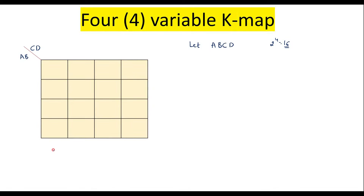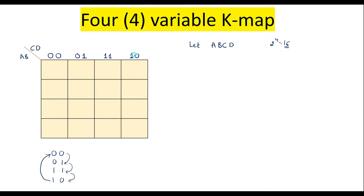We use gray coding to assign binary numbers to each row and column. In gray coding, the sequence is 00, 01, 11, 10 — there is a 1-bit difference from one number to the next. So we assign 00, 01, 11, 10 to both the rows and columns.